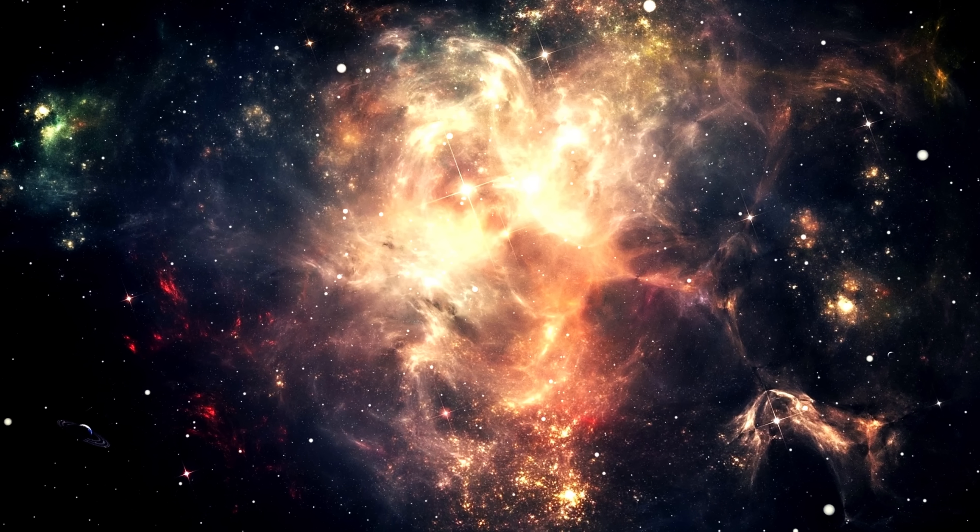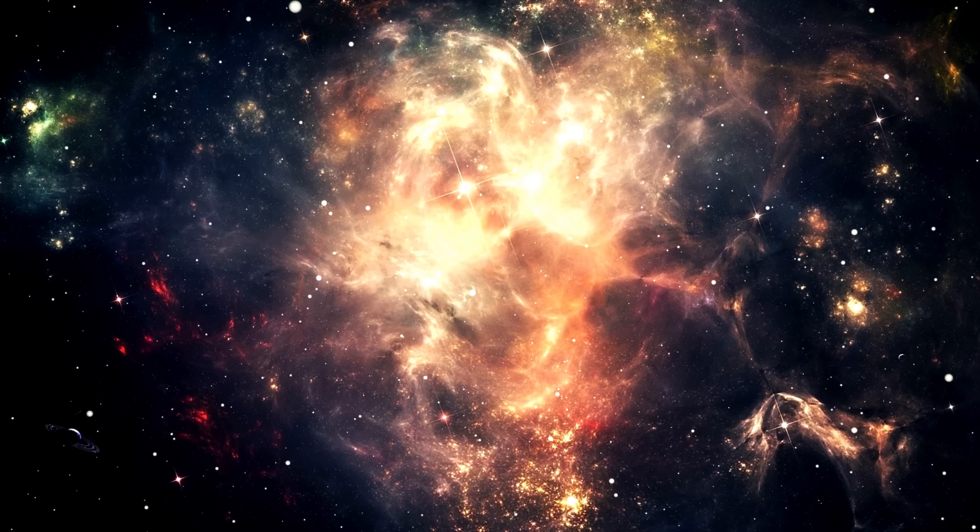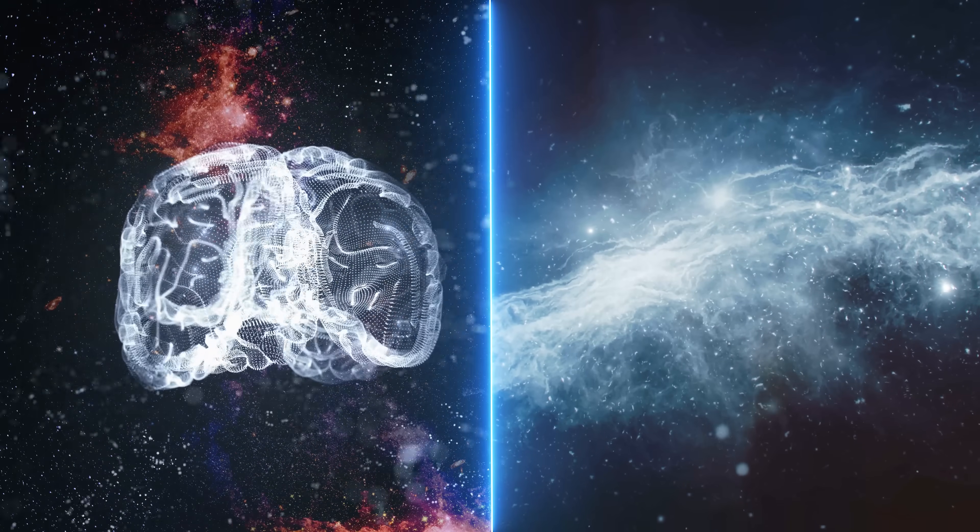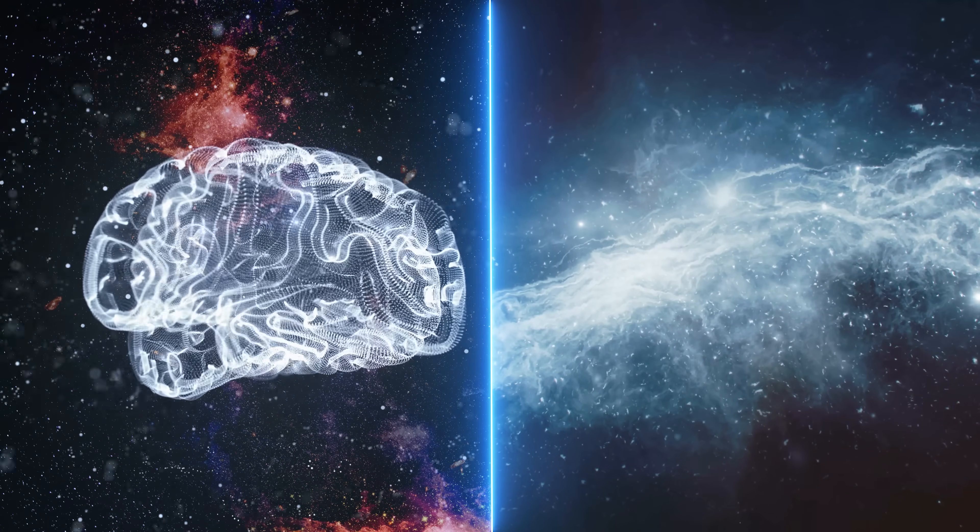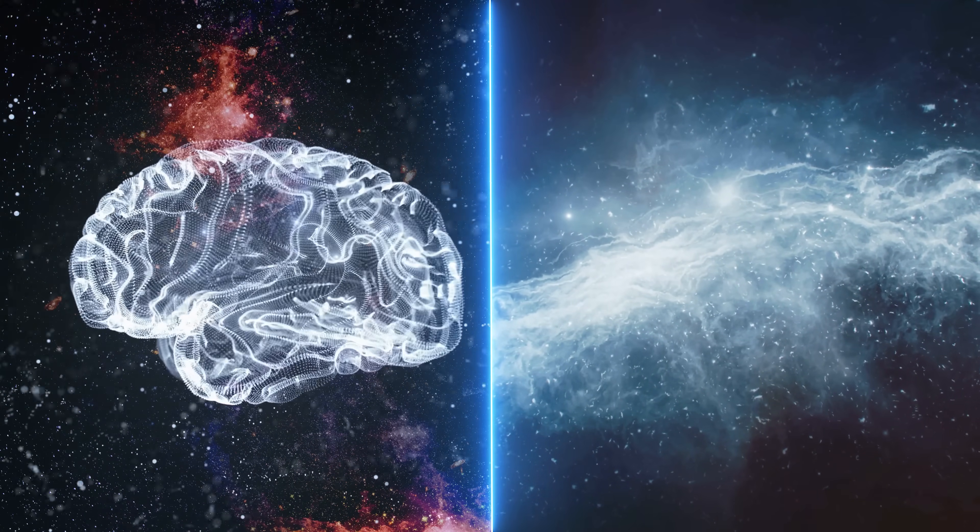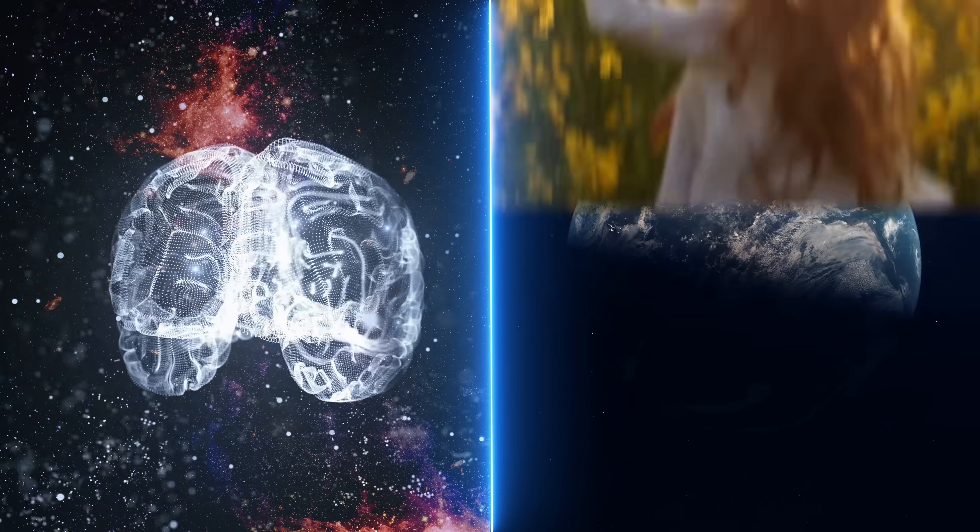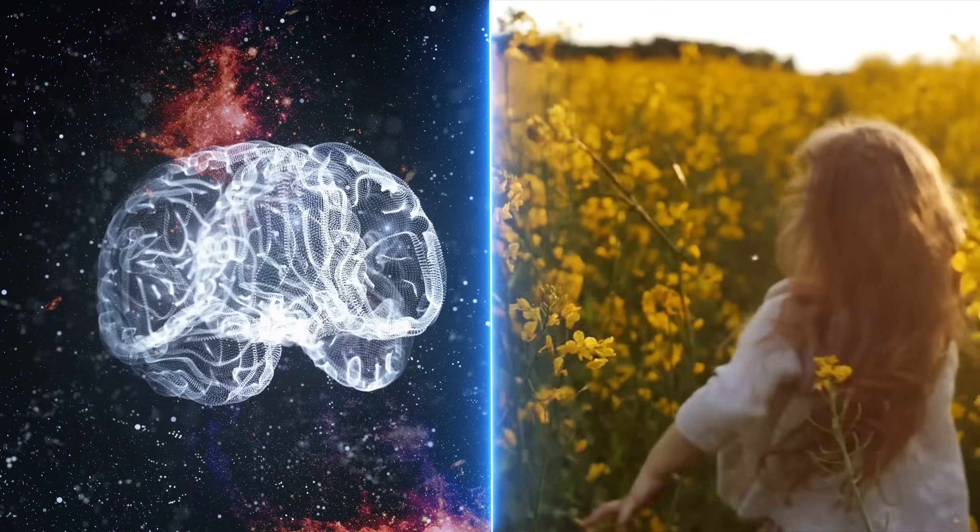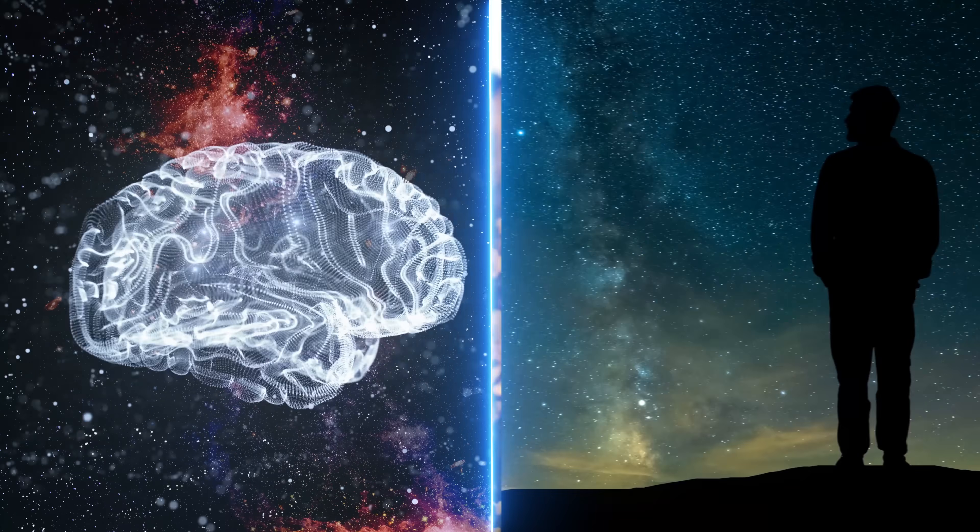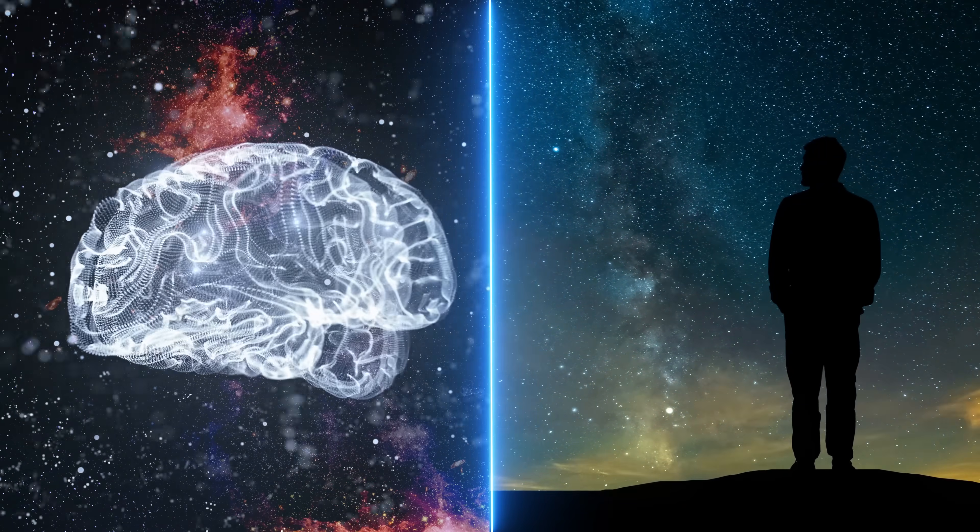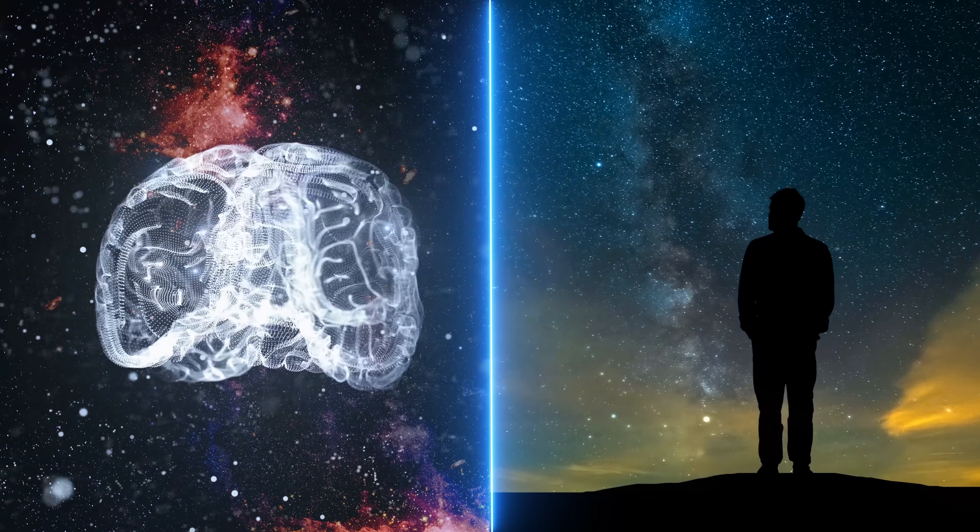The implications of the Boltzmann brain paradox are profound and disturbing. If the existence of such a brain is more likely than the existence of our universe, what does this say about our reality? Are our perceptions and experiences merely illusions? Are we, too, just momentary fluctuations of cosmic chaos?